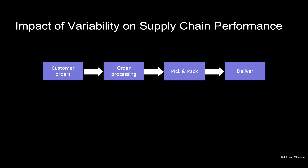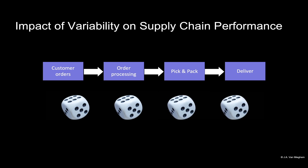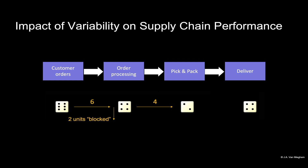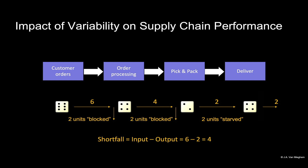Now let's consider what may happen. Depending on the realization of the capacity, two specific things may happen. The first stage had a capacity of six; however, the subsequent stage only had a capacity of four. Therefore, two units were blocked and only four continue on to pick and pack. At pick and pack, the same thing happens where two units were blocked, so that only two units finally go to home delivery. Unfortunately, while home delivery had a capacity of four, it was starved for two units and the total output was two, while the input was six. This is the shortfall — the difference between the input and the output, which in this case is four.